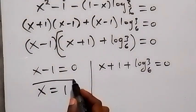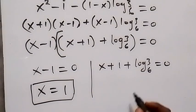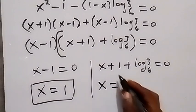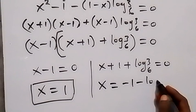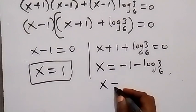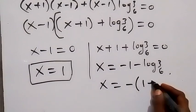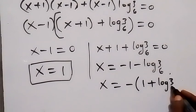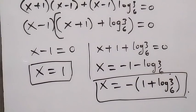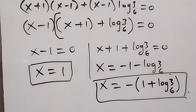From x minus 1 equals 0, x equals 1. From the other factor, taking everything to the other side gives x equals negative 1 minus log 3 base 6, which can be written as x equals negative into bracket 1 plus log 3 base 6. So we have two values of x. Thank you for watching — don't forget to subscribe and turn notifications on. See you in the next class!